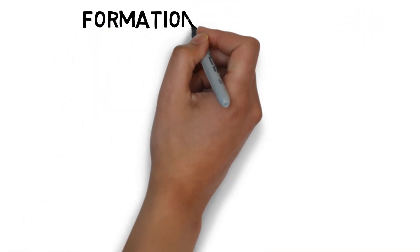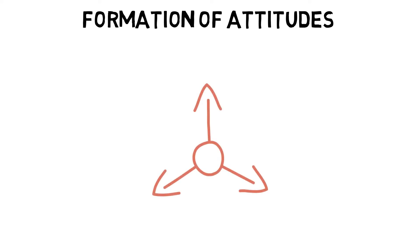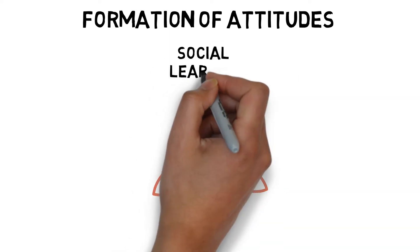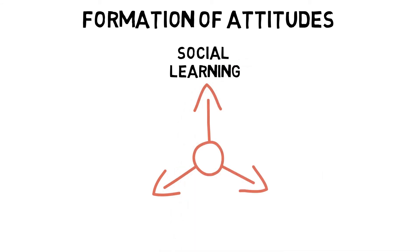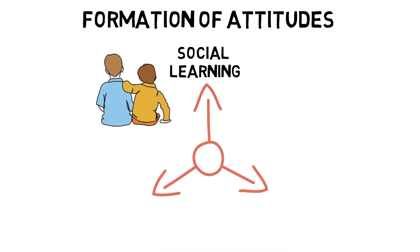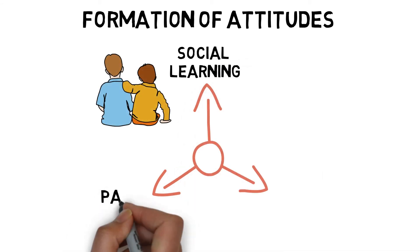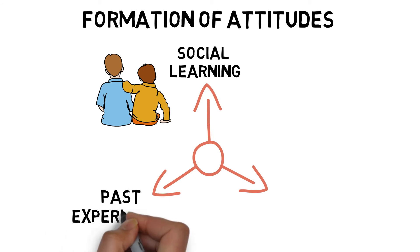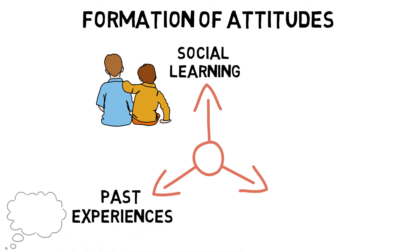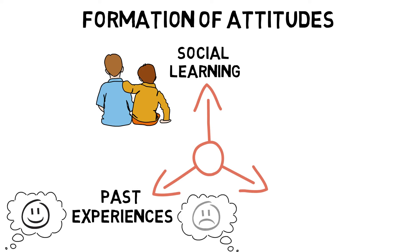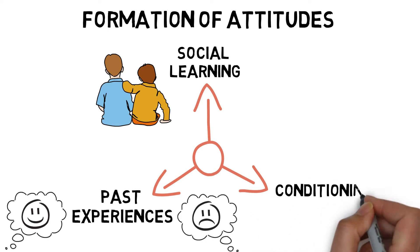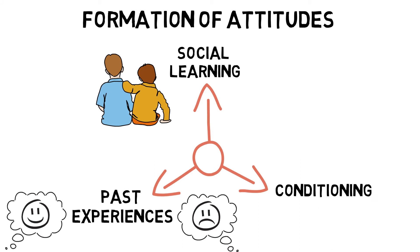Formation of attitudes can be influenced by many factors, such as social learning, where attitudes are strongly influenced by the attitudes of our peers or by imitating a significant other; past experiences, both positive and negative; and conditioning, where attitudes can be strengthened with the use of rewards or praise.